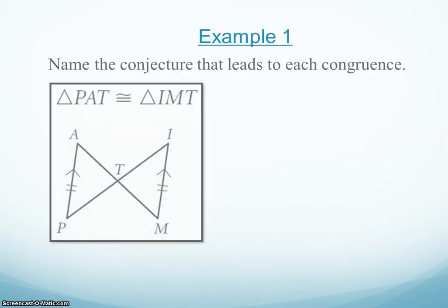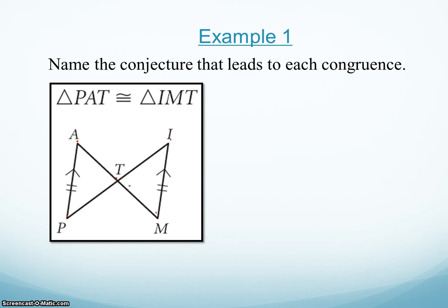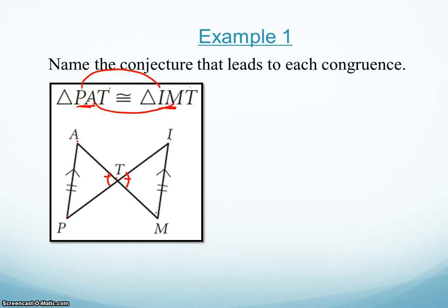So let's do some example problems. Example one says: name the conjecture that leads to each congruence. Triangle PAT is congruent to triangle IMT. So how do we know that those two are congruent? Well, this tells me that P is congruent to I, A is congruent to M, and T is congruent to T of the two triangles. Looking at this, I know that this angle here is congruent to that angle because those are vertical angles. And I have markings that show that PA is congruent to IM, and they are in corresponding locations.